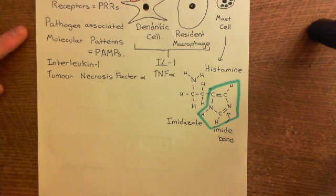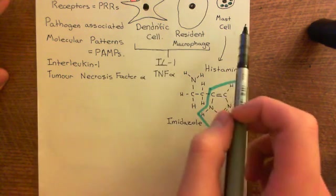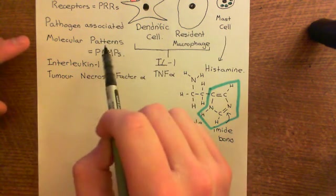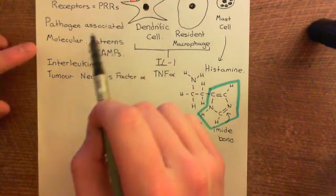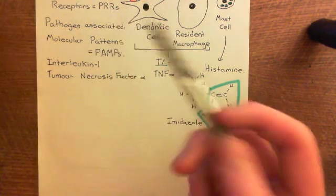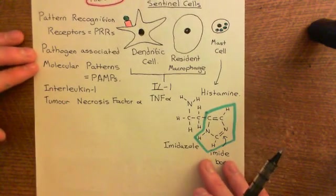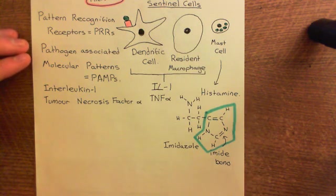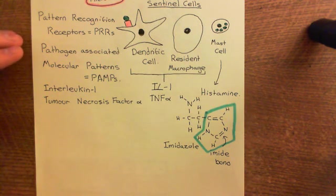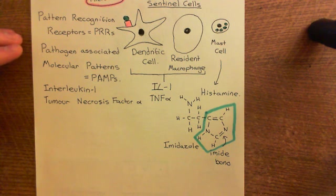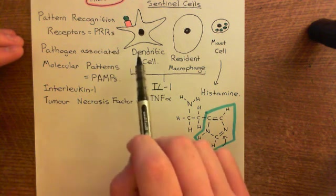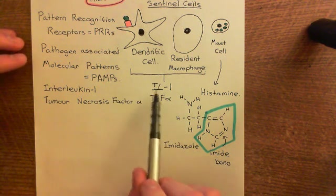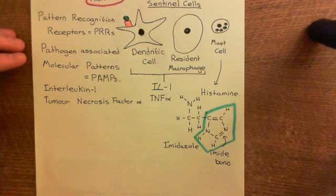These PAMPs have receptors on the surface of sentinel cells which bind to them. There are many different PAMPs, and they'll all have their own different receptors — it's not as though every single PAMP binds to the same receptor. Dendritic cells, resident macrophages, and mast cells are the three sentinel cells. When their pattern recognition receptors are activated, dendritic cells and resident macrophages release interleukin-1 and tumor necrosis factor alpha, and mast cells degranulate and release histamine.